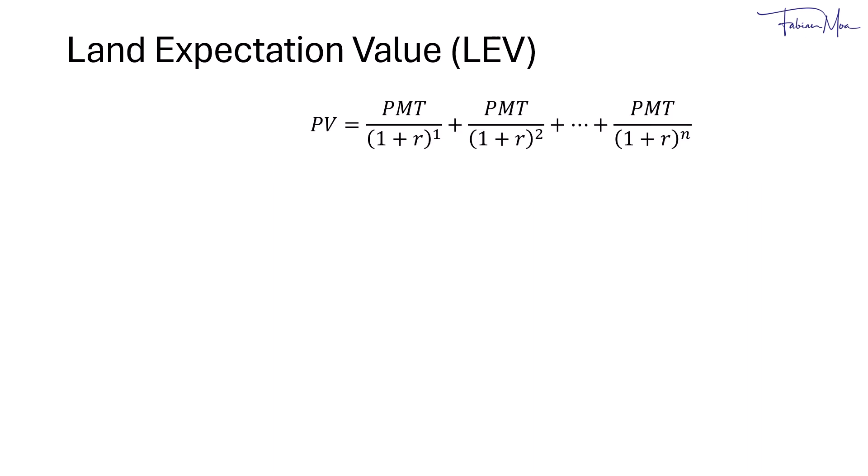Let's break down how we arrive at the LEV formula. We start with the present value of a series of cash flows from timber rotations, represented as PV. This is calculated by summing up the periodic payments, PMT, discounted by the required rate of return, R, for each year of the rotation cycle. Since this is a geometric series, we can simplify it. The present value formula for a finite annuity gives us PMT divided by R, multiplied by 1 minus 1 over (1 plus R) to the power of N.